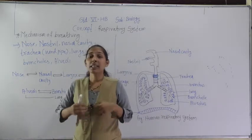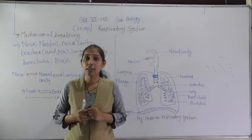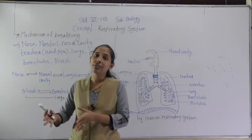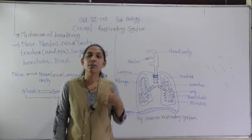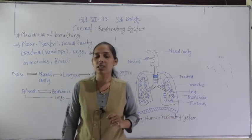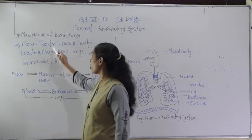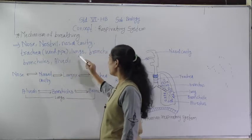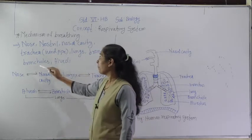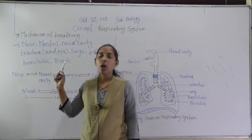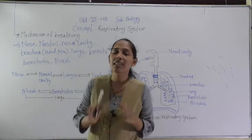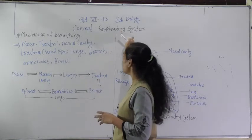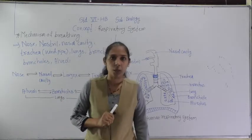There are different organs, and when many organs come together they form a different organ system. Like that, the respiratory system also consists of different organs: nose, nostril, nasal cavity, trachea (also called the windpipe), lungs, bronchi, bronchioles, and alveoli. All these are the respiratory organs of the respiratory system.